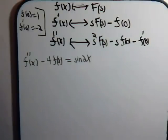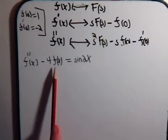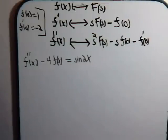Okay, let's solve this differential equation. We have a function f of x and we're going to take its second derivative minus 4 times that function has to be equal to the sine of 2x.